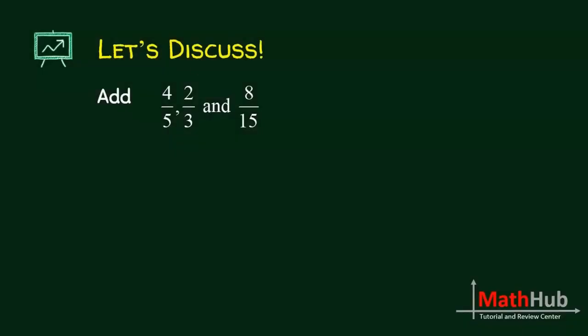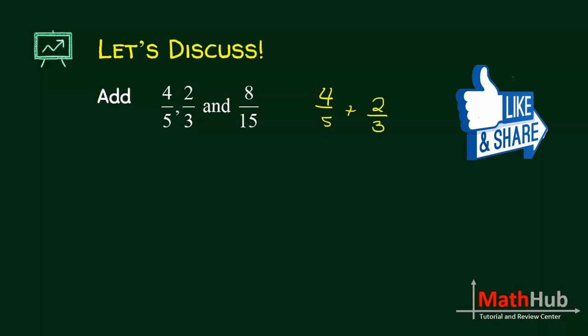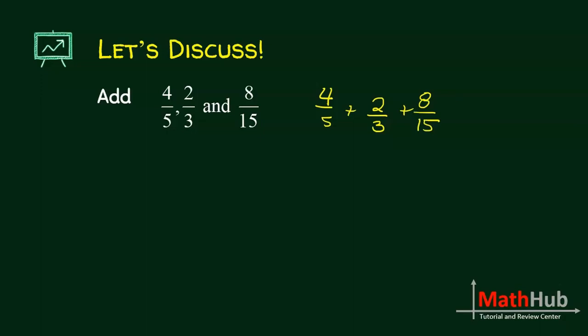Let's look at this example. We want to add 4 fifths, 2 thirds, and 8 over 15. What is our LCD? What is the number that can be divided by all of 5, 3, and 15? I always look at the biggest number and then look at their multiples. Is 15 divisible by 5? Yes. Is 15 divisible by 3? Yes. So my LCD is 15.